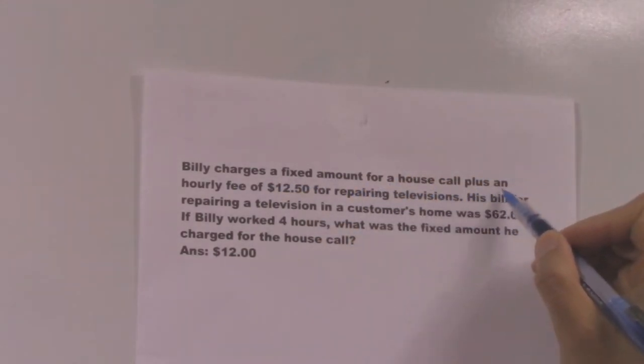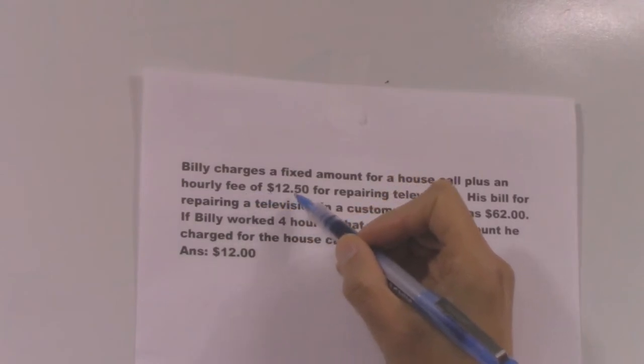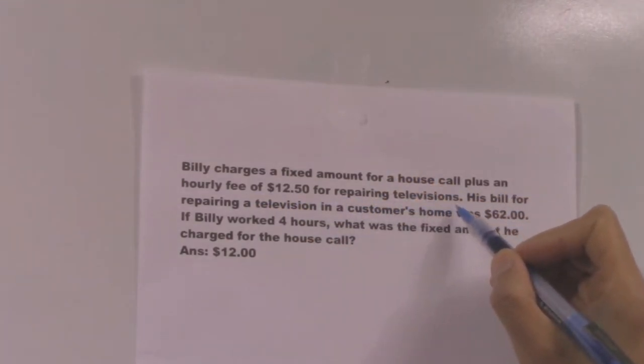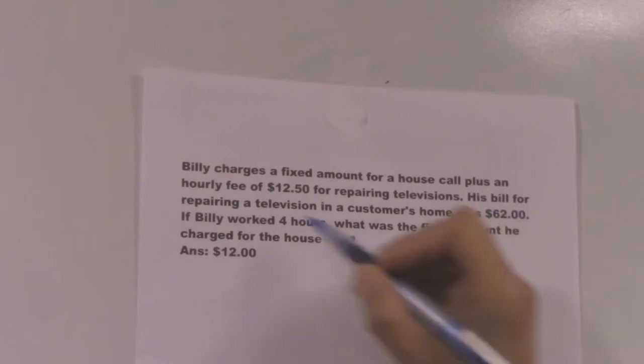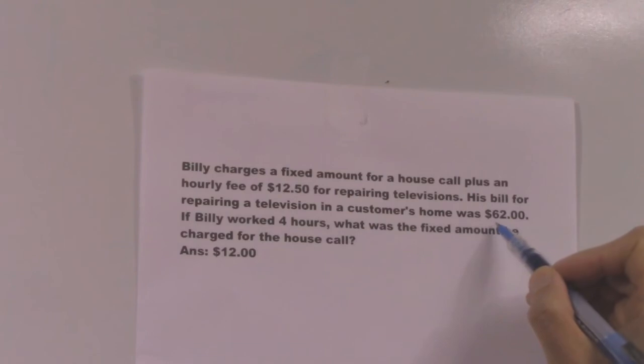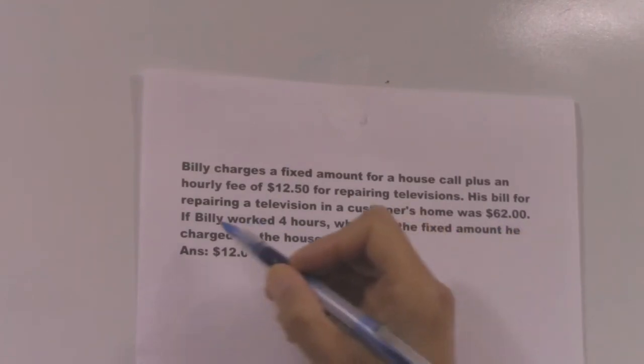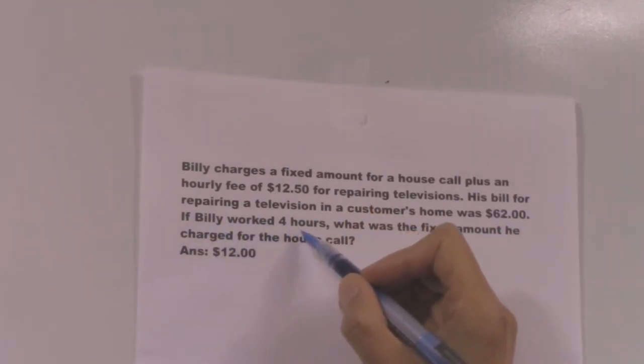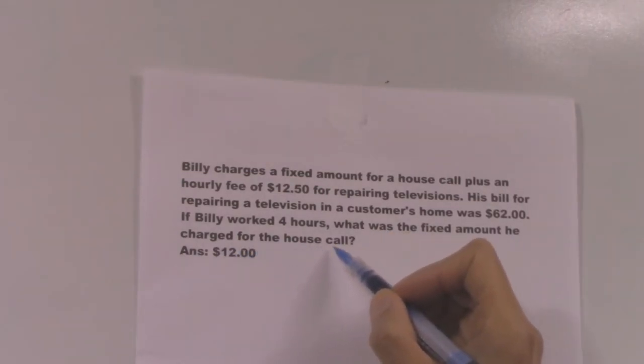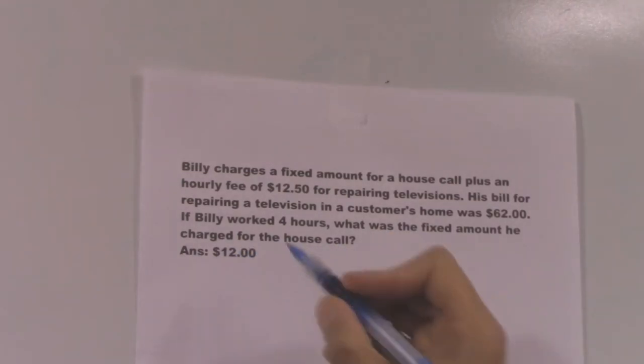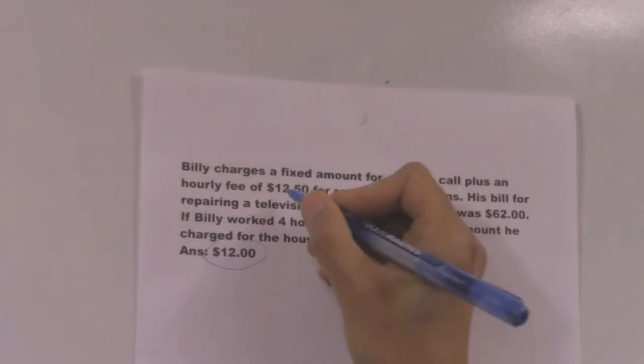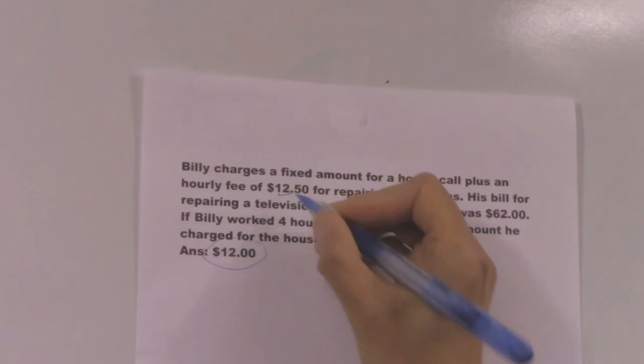Problem three: Billy charges a fixed amount for a house call plus an hourly fee of $12.50 for repairing televisions. His bill for repairing a television in a customer's home was $62. If Billy worked 4 hours, what was the fixed amount he charged for the house call?